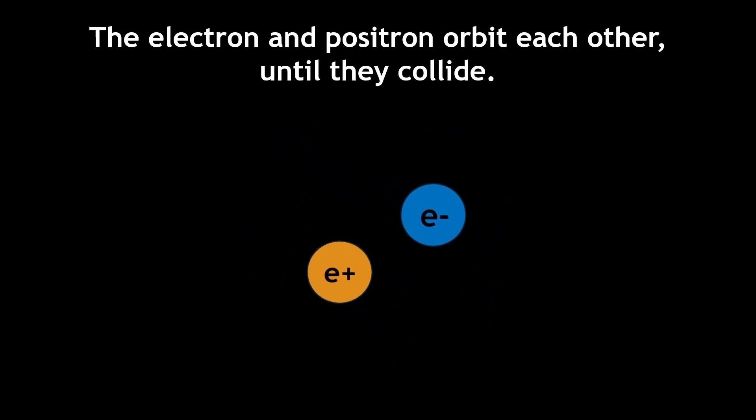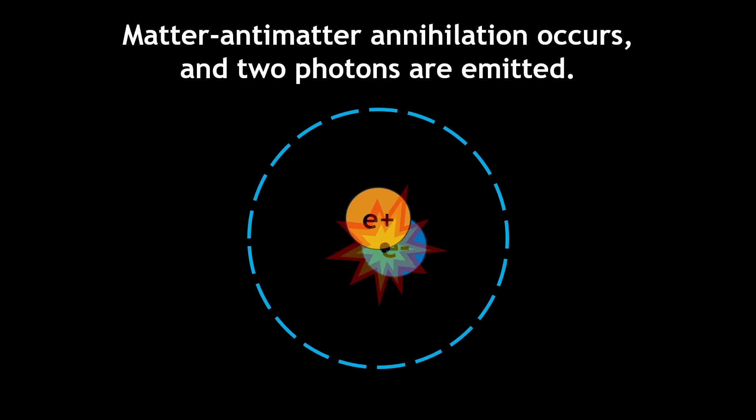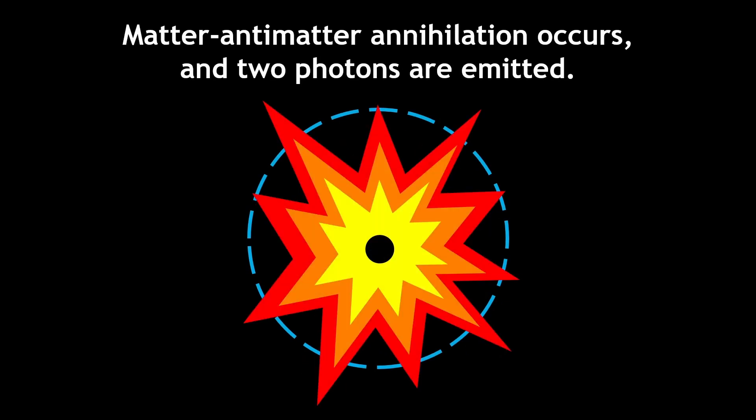Positronium is very unstable because of its matter-antimatter annihilation, which occurs when a subatomic particle collides with its antimatter counterpart. The atom is annihilated, and two photons are emitted.